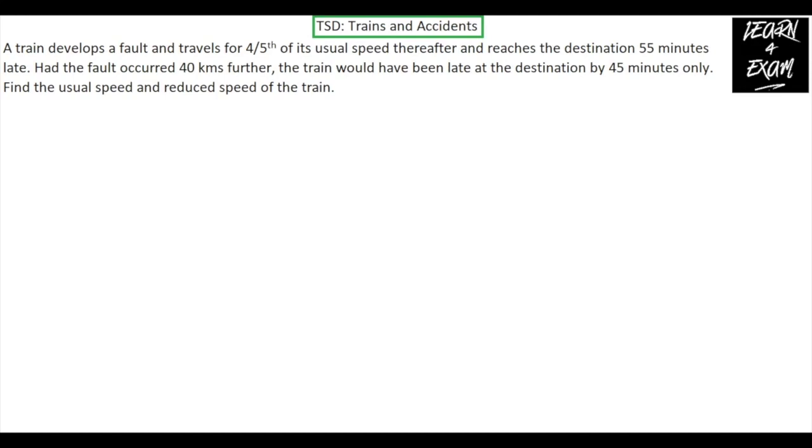Hello and welcome everyone. Today in this video we will be covering the classic problem of a train when it meets with an accident. Now let us first read the question. A train develops a fault and travels for four-fifths of its usual speed thereafter and reaches the destination 55 minutes late. Had the fault occurred 40 kilometers further, the train would have been late at the destination by only 45 minutes. We need to find out the usual speed and the reduced speed of the train.